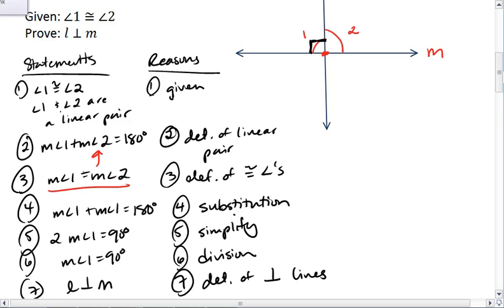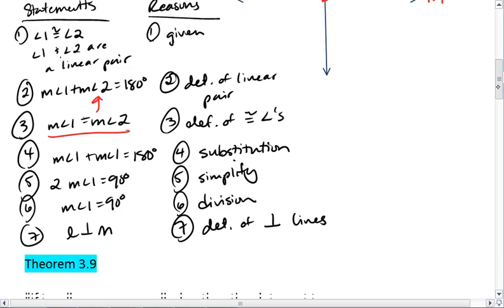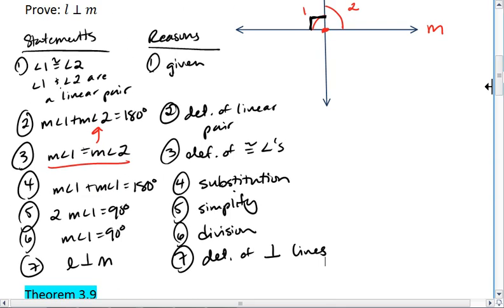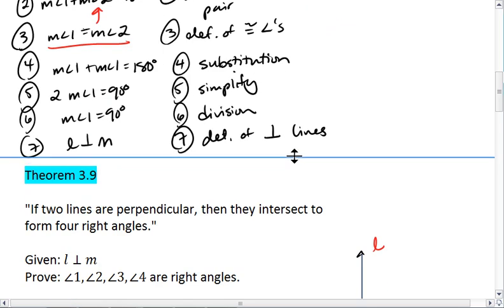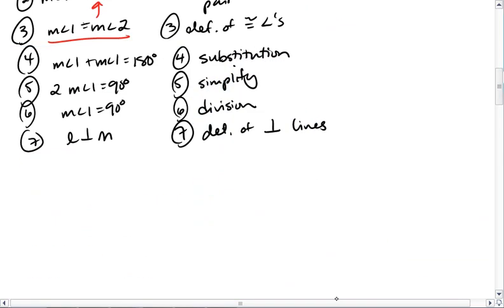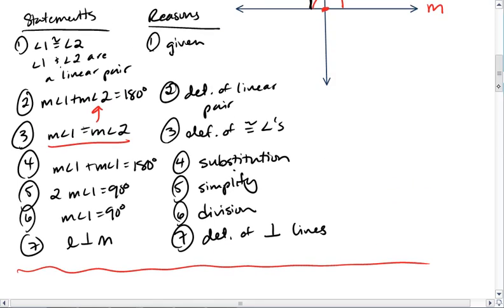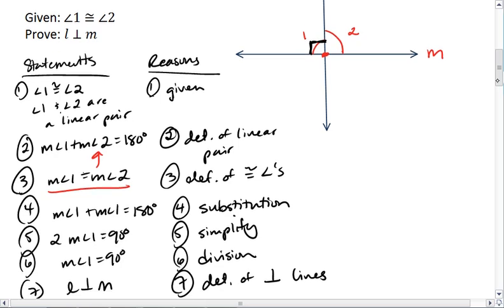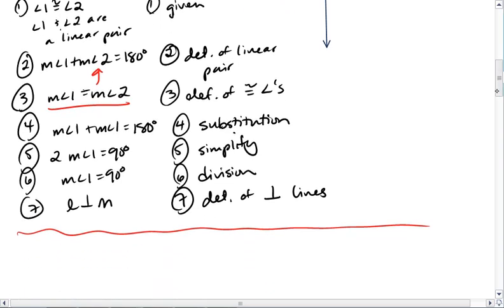If you would prefer, you can write what is called a paragraph proof. And I'll do that below here. A paragraph proof would look something like this. It says all the same stuff, but it says it in a paragraph. So it would say that angle 1 is congruent to angle 2, which is a given.